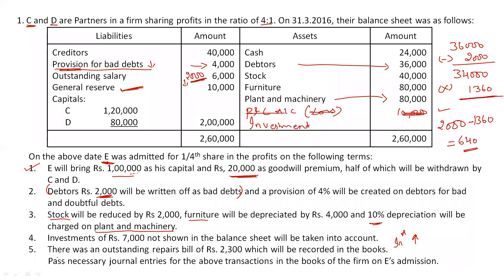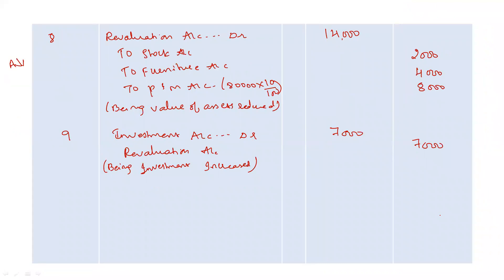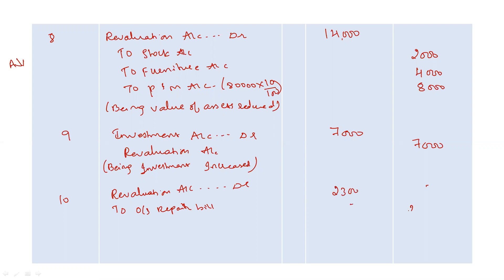Fifth and last adjustment: there was an outstanding repairs bill of rupees 2,300 which will be recorded in the books. This is a new liability not mentioned in the balance sheet — liability is increasing, so we credit it. Tenth journal entry: Revaluation Account debit to Outstanding Repair Bill Account, rupees 2,300. Narration: being outstanding repair bill recorded.